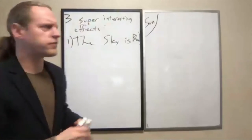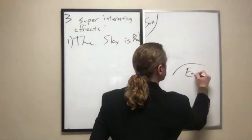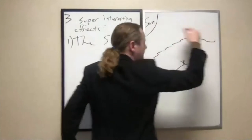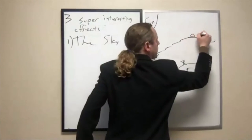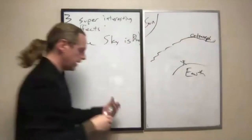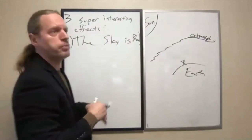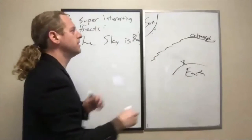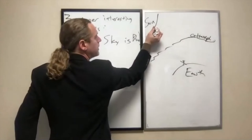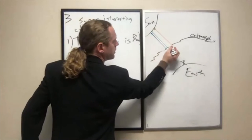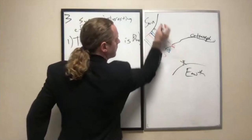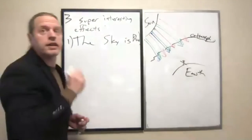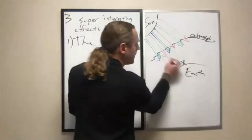I'll try to draw this out. Here's the sun, here's Earth, here's us, and here's Earth's outer hazy atmosphere. What our sun does is it outputs all the colors of light — not at perfectly equal amounts, but it outputs a lot of light of all colors, coming at all angles. The red light is more or less allowed to pass right through.